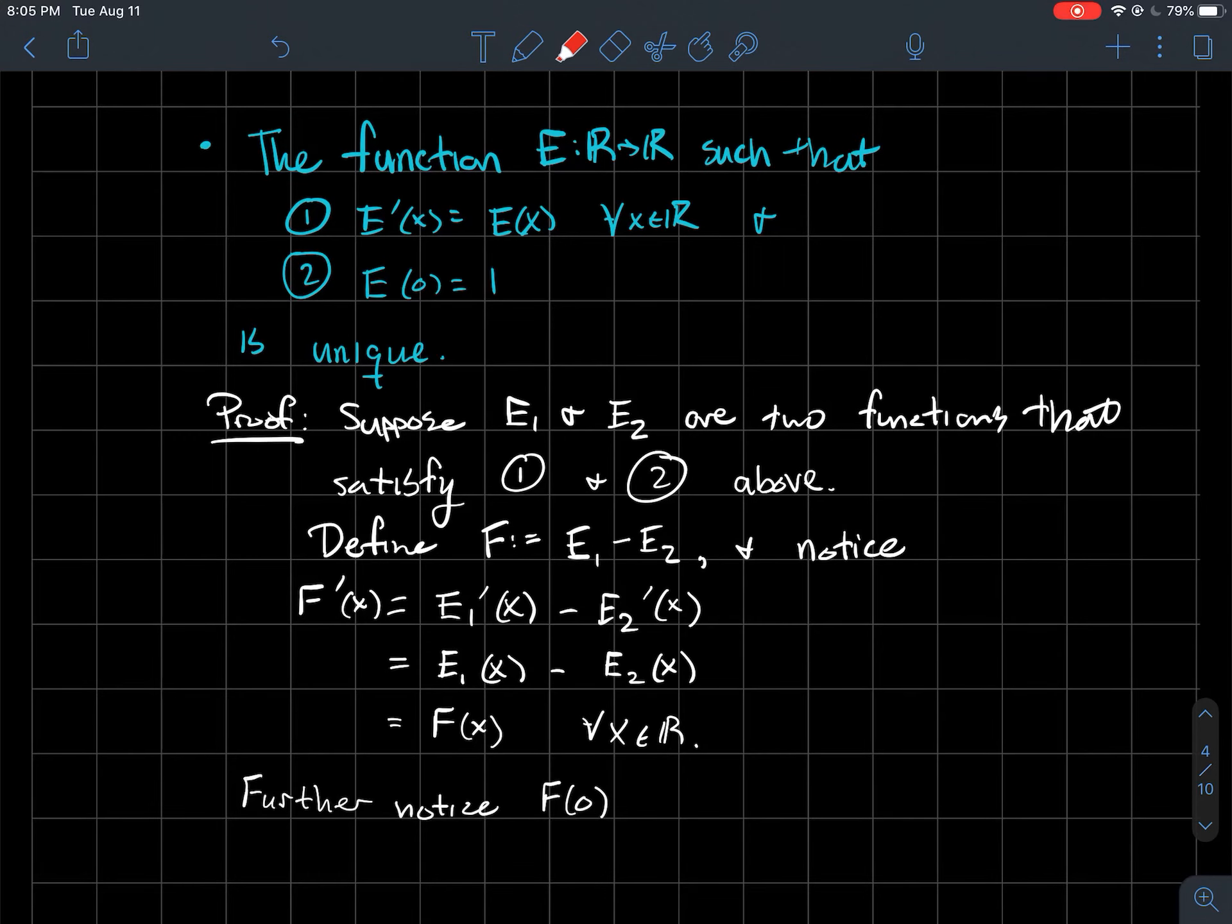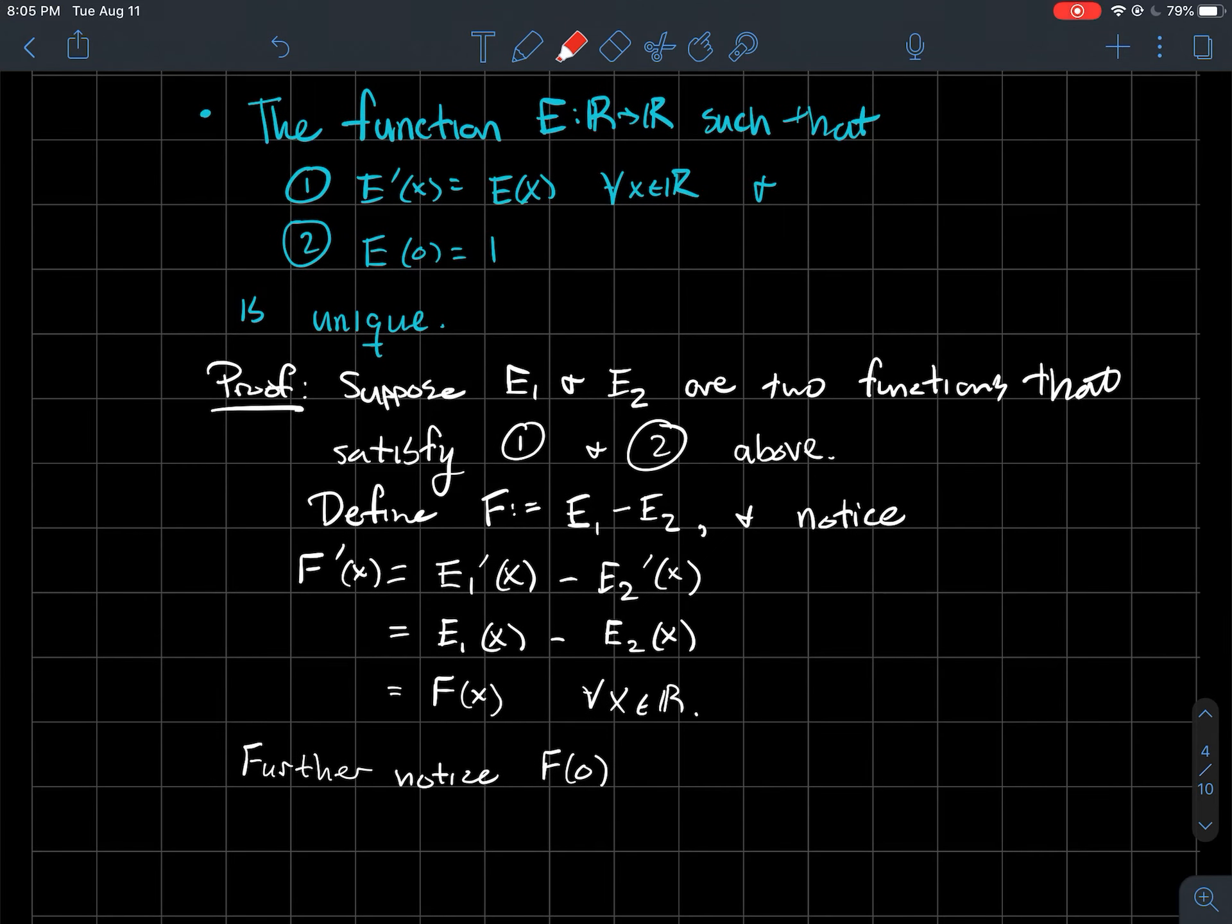And you probably already see what happens when we plug zero into F. When I plug zero into F, well by definition plug it into E1 and plug zero into E2 and subtract. But E1 of zero, well E1 was supposed to satisfy number two so that's one, and similarly E2 of zero has to be one, so in fact F of zero is going to be zero.